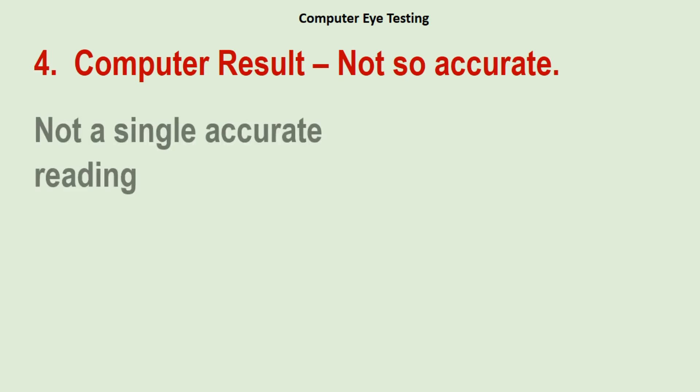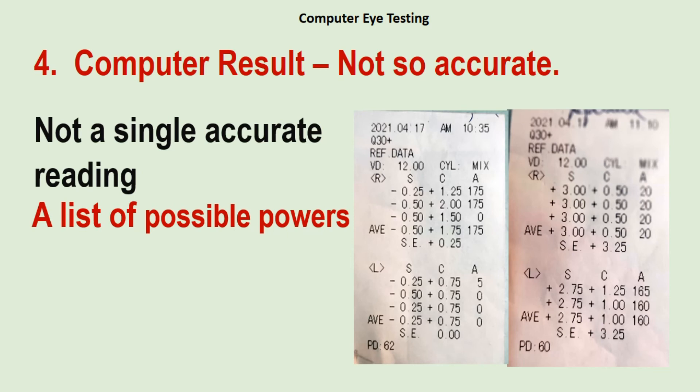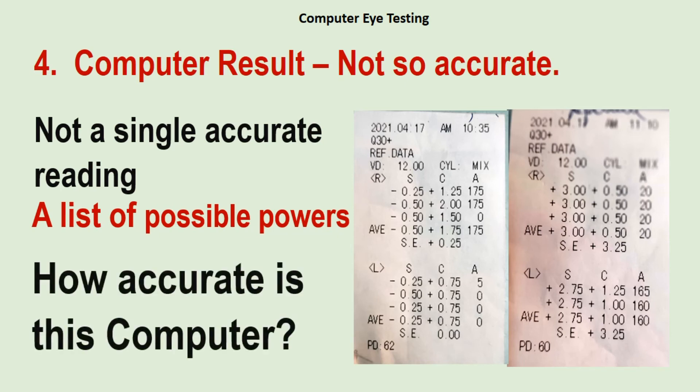Regarding computer result accuracy — it's not very accurate. Have you ever looked at the printed result slip that comes out of the machine? You will find that it does not give a single accurate spectacle power; it gives at least five different readings. The examiner cannot straightaway prescribe spectacle power based on these results. The examiner has to examine the individual subjectively, based on multiple readings, and then select one for the glass prescription. So the question arises: how accurate is the auto refractor?